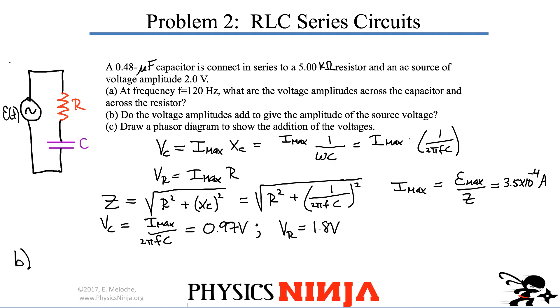For part B, do the voltage amplitudes add to give the amplitude of the source? The amplitude of the source is 2. So, do the voltages add? Well, check it out. Do we have 0.97 plus 1.8? Does that equal 2? The answer is no, it does not equal 2. And it doesn't equal 2 because these voltages are not in phase with each other.